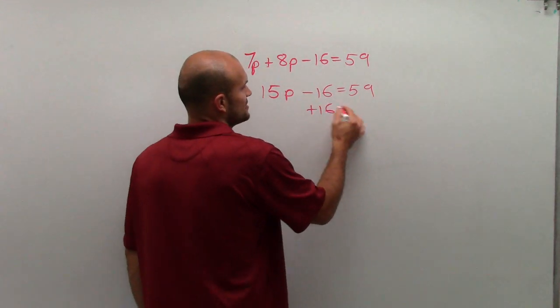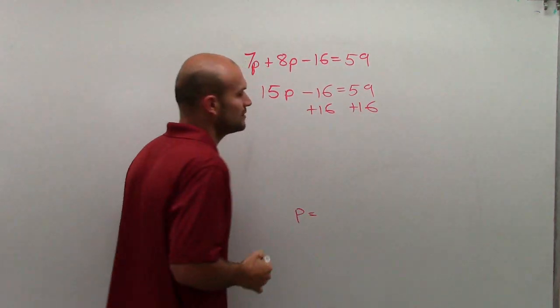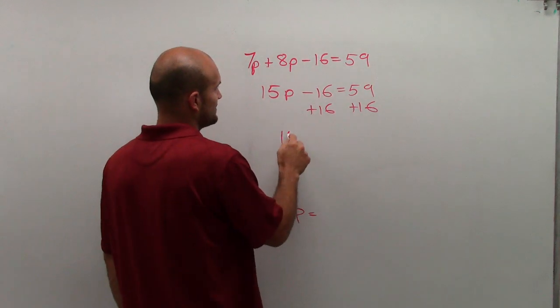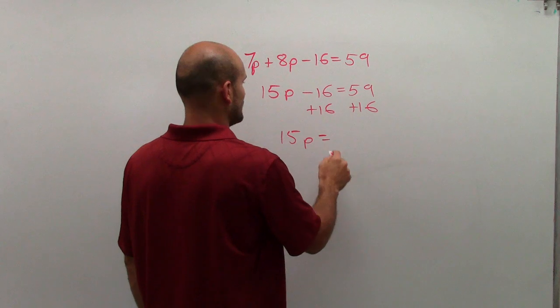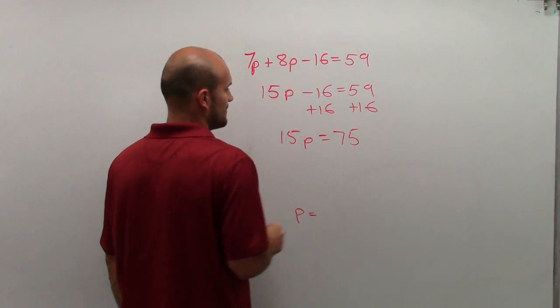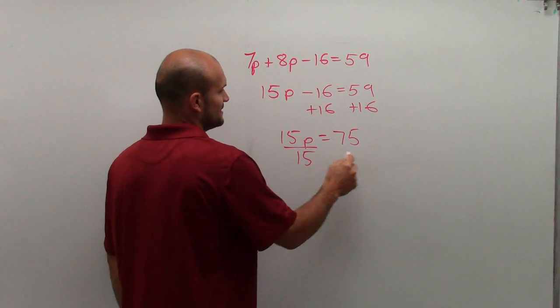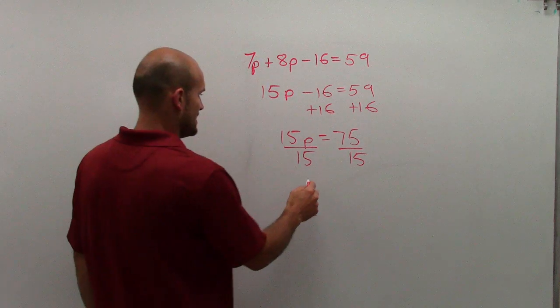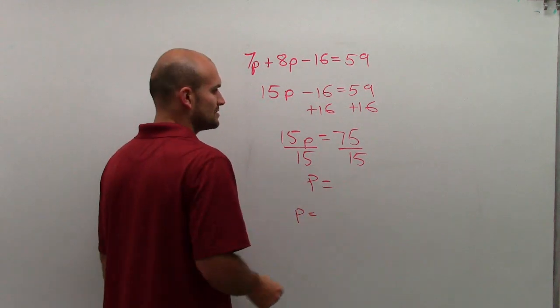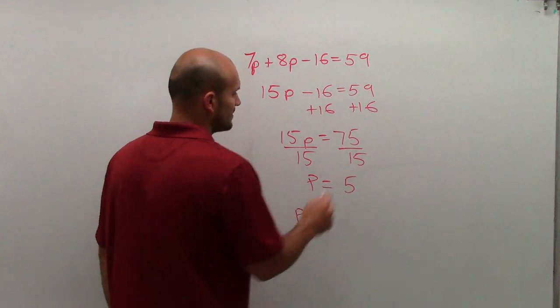You're going to undo subtraction first using addition property of equality. Then we'll have 15p equals 75. Then divide by 15, and you'll have p equals 5.